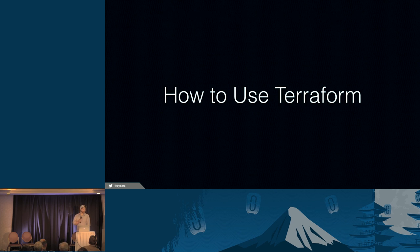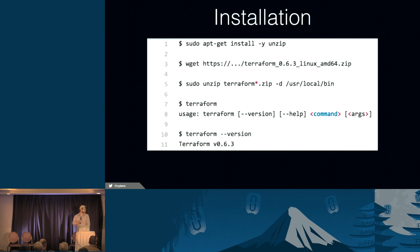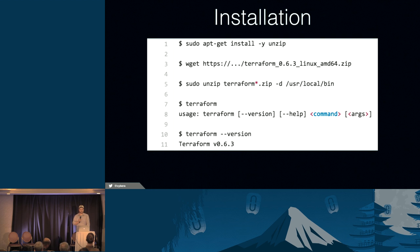How do you use Terraform? It's a Go-based application, so all you need to worry about is whether your workstation can read zip files. Once you have that, you download the zip file. You can either run the binaries directly from that directory, or move them somewhere on your path. Once that's done, just run the Terraform command and make sure it's executing properly. That last example is just echoing what version of Terraform you have.